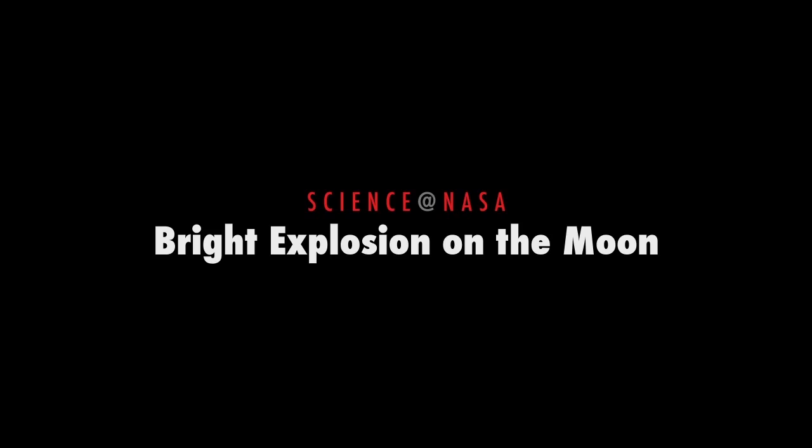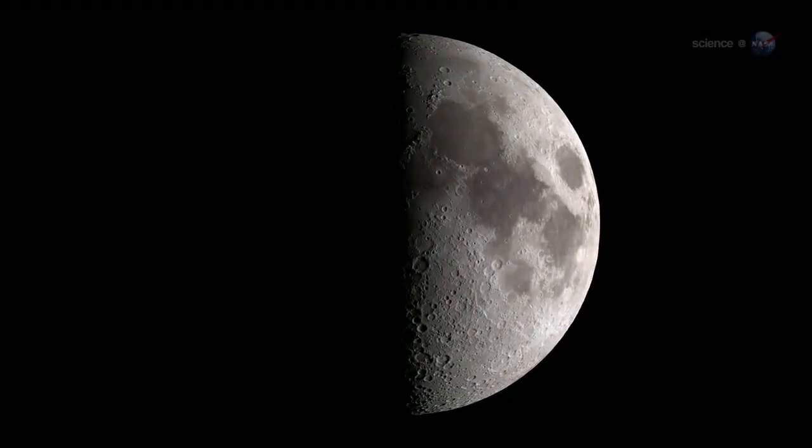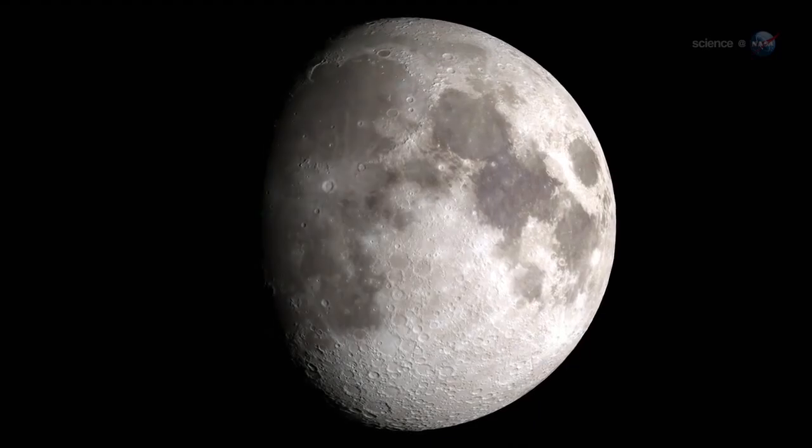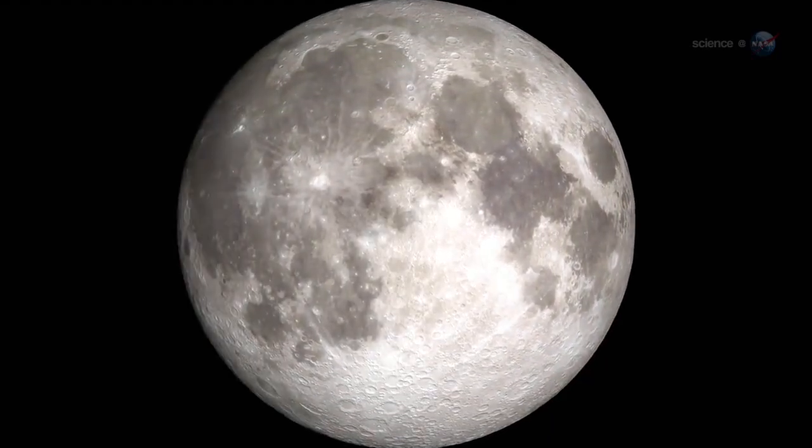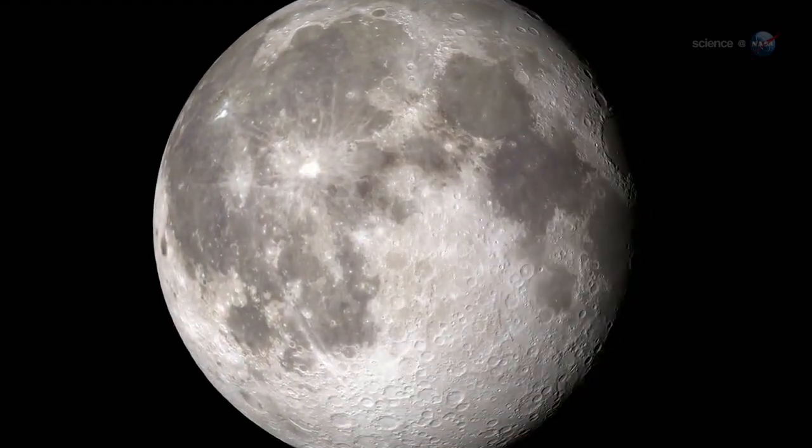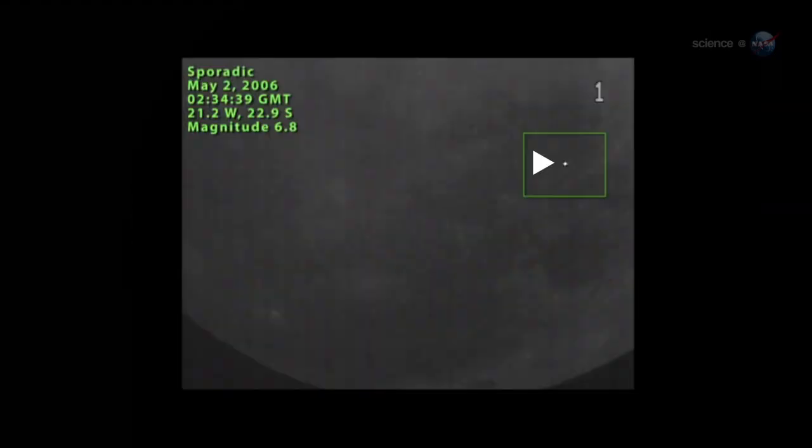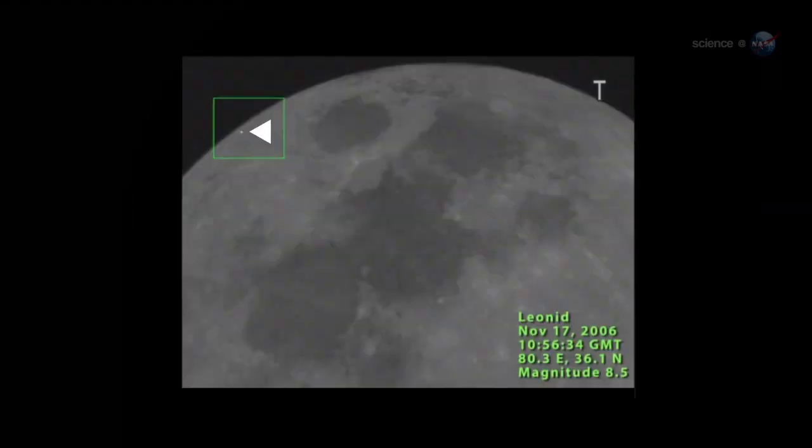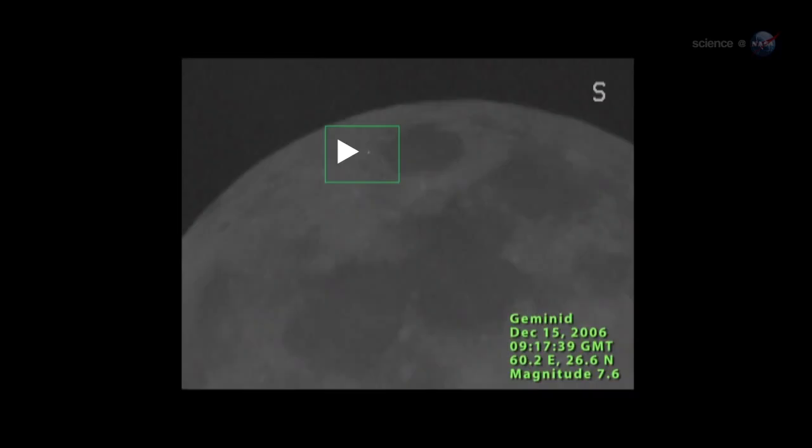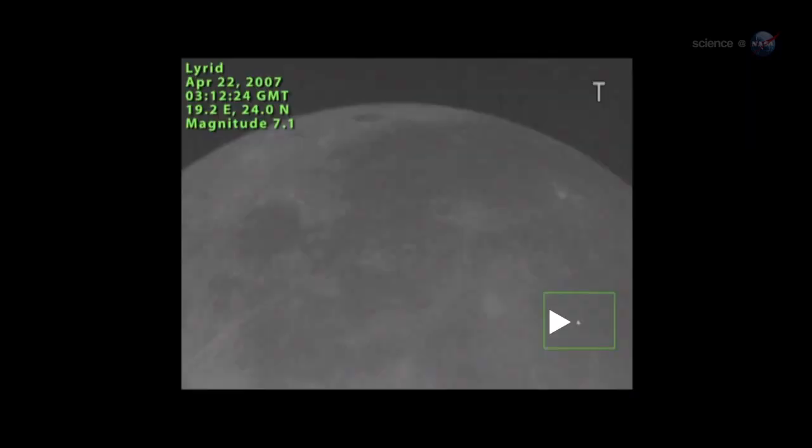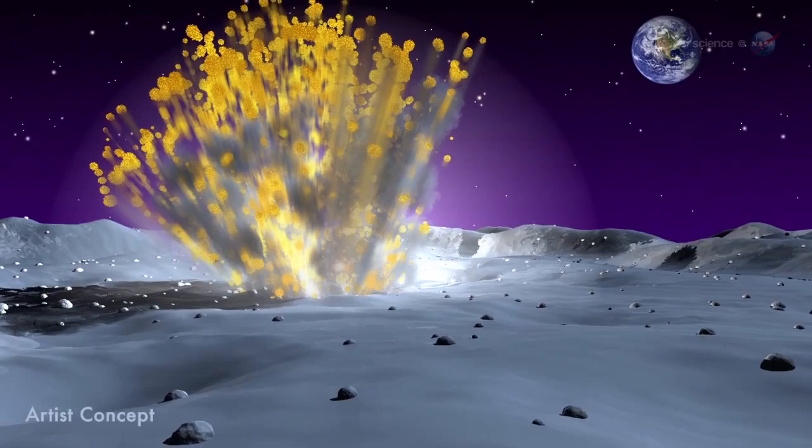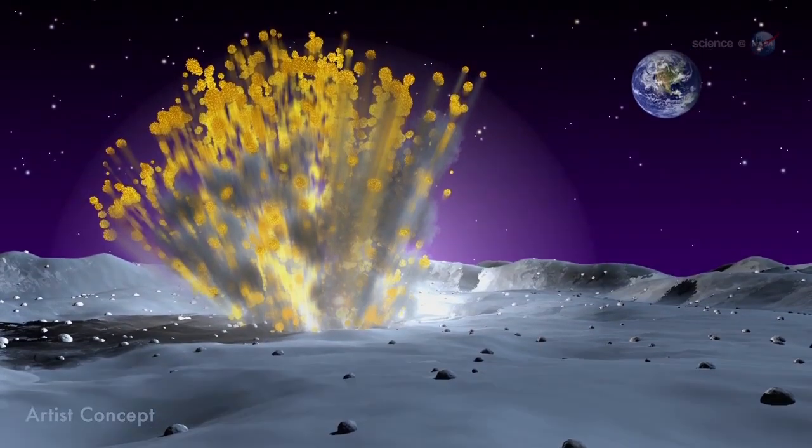Bright Explosion on the Moon, presented by Science at NASA. For the past eight years, NASA astronomers have been monitoring the Moon for signs of explosions caused by meteoroids hitting the lunar surface. Lunar meteor showers have turned out to be more common than anyone expected, with hundreds of detectable impacts occurring every year. They've just seen the biggest explosion in the history of the program.